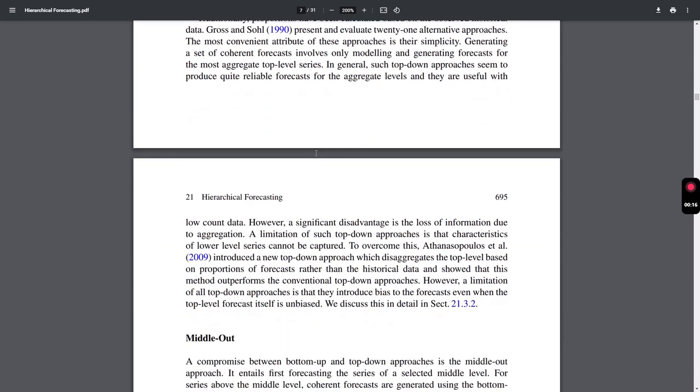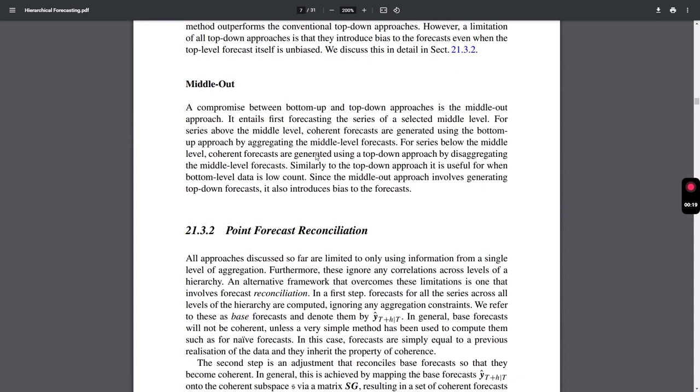A compromise between top-down and bottom-up is middle-out. Instead of starting either from the top or from the bottom, we can start straight from the middle layer. This is a compromise between the two approaches. We use the top-down approach to predict lower levels and the bottom-up approach to predict upper levels.